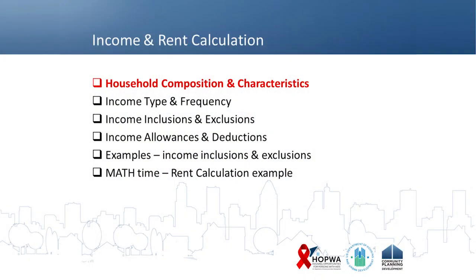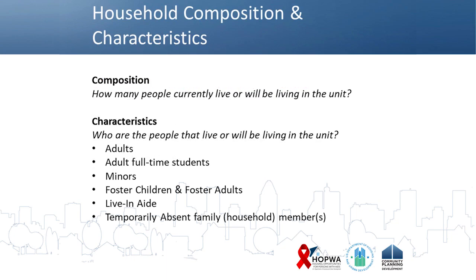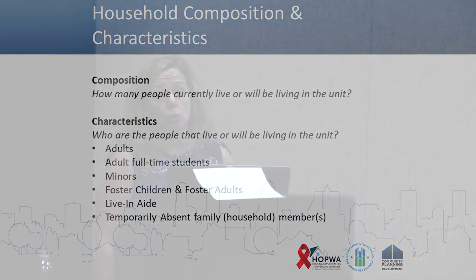These are a few things we're going to talk about today — basically how the presentation is organized. First, we're going to talk about household composition and characteristics: how many people are going to be living in the household? Do you expect anybody to leave or join? You're also going to want to know the characteristics — who's living there with you. It's not because you're being nosy; you need to know if you're going to have any adults, any adult full-time students, any minors, foster children, foster adults, a live-in aide, or a temporarily absent family member, because you really want to know who and the age of the folks living there.